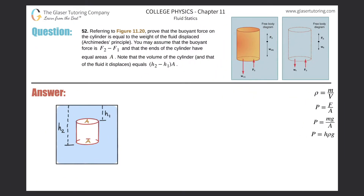Number 52, referring to figure 11.20, prove that the buoyant force on the cylinder is equal to the weight of the fluid displaced, which is basically Archimedes' principle. I'm going to do it my own way with my own diagram here.